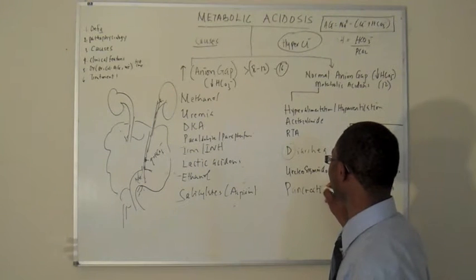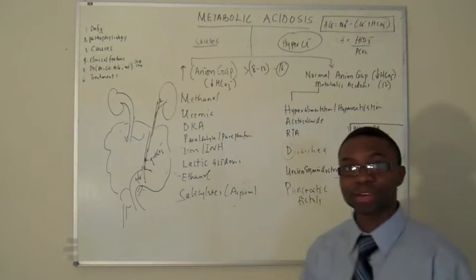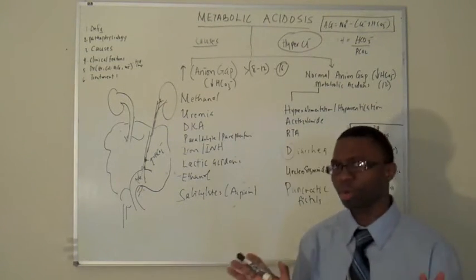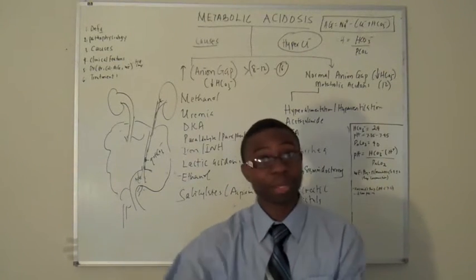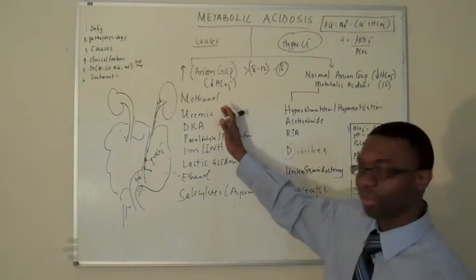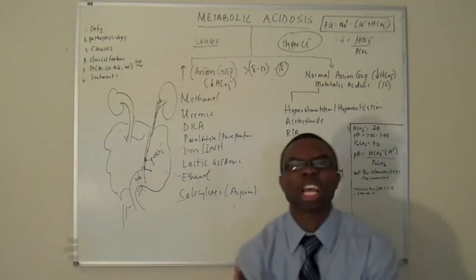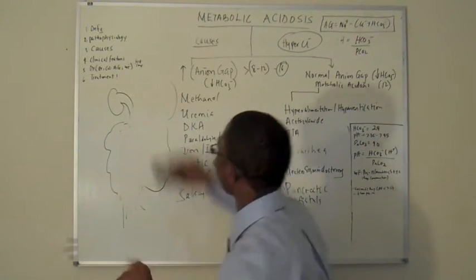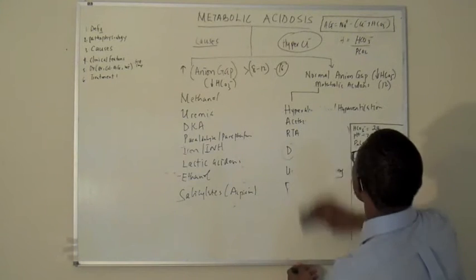Pancreatic fistula — there's the pancreas, and it produces a lot of bicarb. The pancreas just dumps it out. HOT MUD POPS — beautiful mnemonics. Those are the causes.